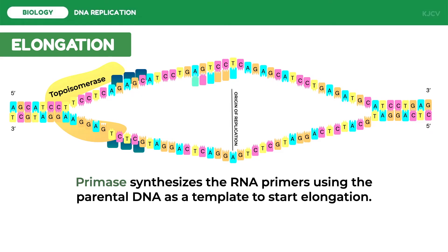The two strands of DNA are anti-parallel, meaning if one parent strand runs 5 prime to 3 prime, the daughter strand runs 3 prime to 5 prime. Elongation will only occur in the 5 prime to 3 prime direction, meaning nucleotides will only be added wherever there is a free 3 prime hydroxyl end. This is carried out by the enzyme DNA polymerase III.